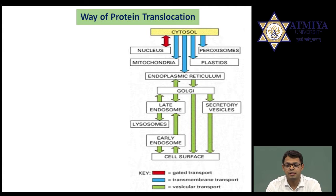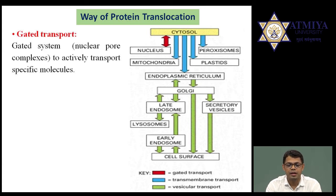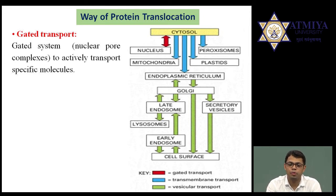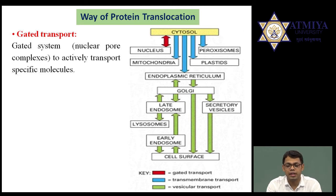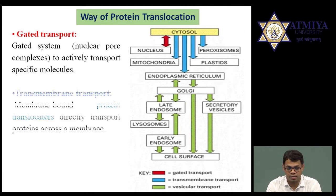Let us see in detail about protein translocation. Suppose protein is synthesized in the cytoplasm — there are three ways to transport protein. First is gated transport: if protein synthesized in the cytoplasm is transported from cytoplasm to the nucleus, this is called gated transport. It may also be vice versa — protein can be translocated from cytoplasm to nucleus or reverted back to the cytoplasm — these are all part of gated transport.